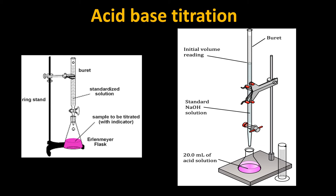We set up the titration apparatus. You can see the vertical stand here. This is the conical flask, and HCl is being added drop-wise into the sodium hydroxide solution containing phenolphthalein. After the color change to light pink, we record the readings. The reading is taken from the burette — it is a calibrated burette.